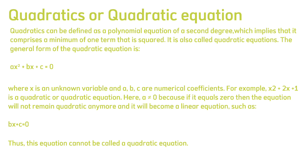For example, x² + 2x + 1 is a quadratic equation. Here, a is not equal to 0 because if it equals 0, then the equation will not remain quadratic anymore and it will become a linear equation, such as bx + c = 0. Thus, this equation cannot be called a quadratic equation.